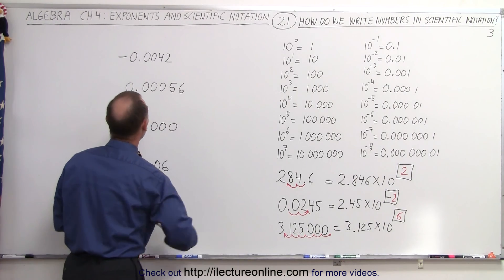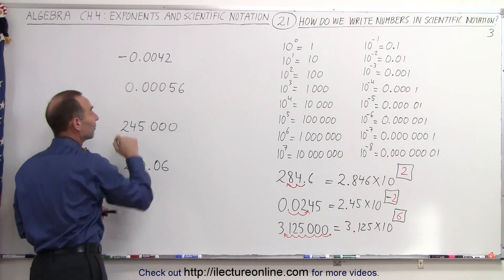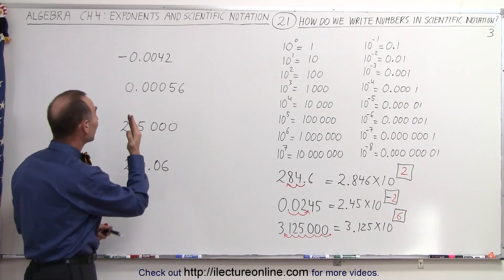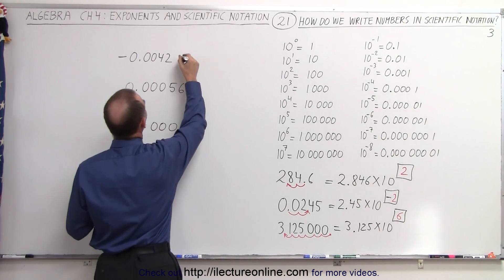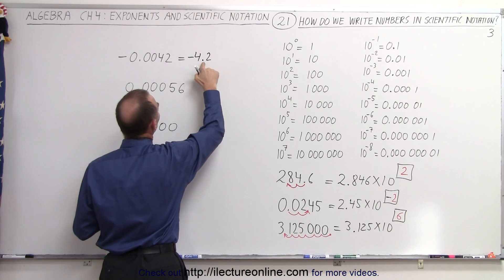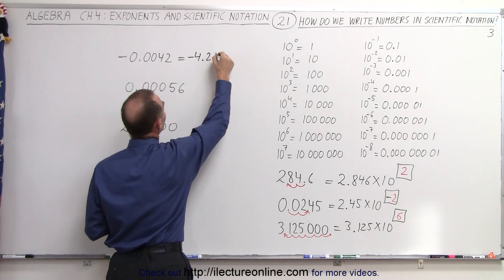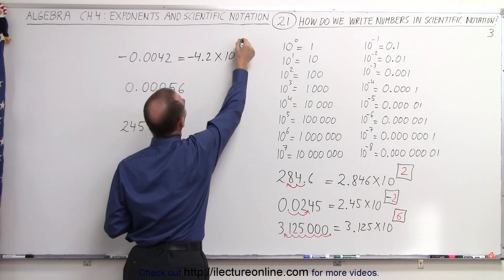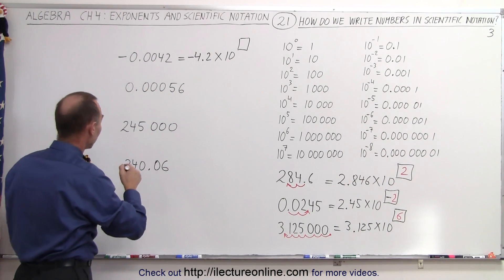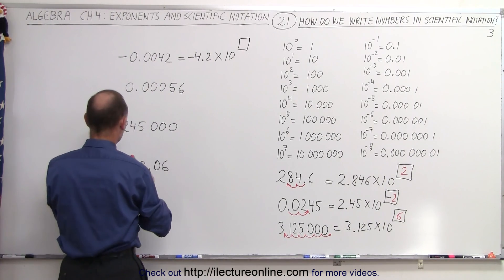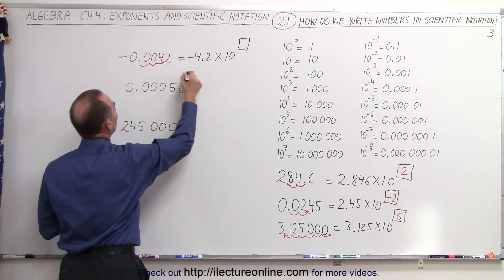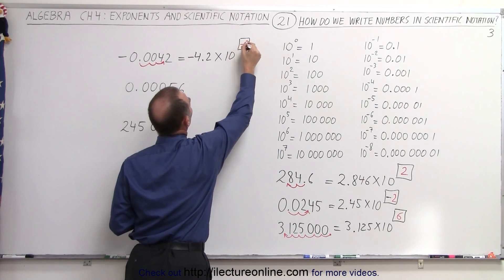Let's try this one right here. Now, since there's a negative sign in front, it actually makes no difference at all. We simply ignore that negative sign. This will be equal to minus 4.2 — all that matters is where we put the decimal point — times 10 to some exponent. Did we move to the right or to the left? In this case we had to move to the right: 1, 2, 3 spots. That means I need a minus 3 over there.